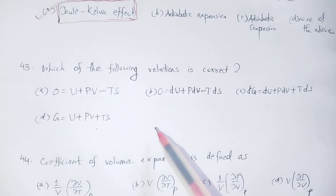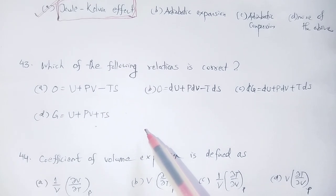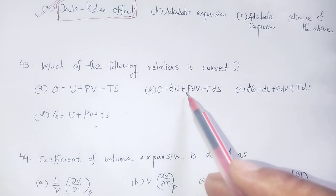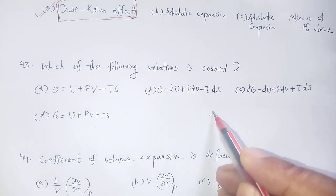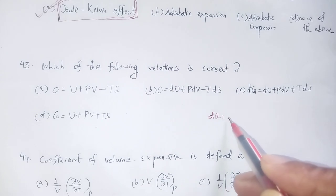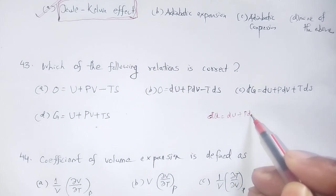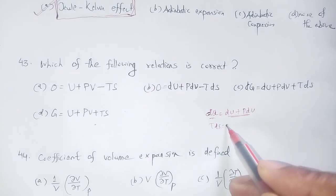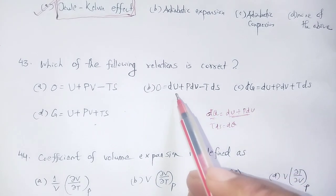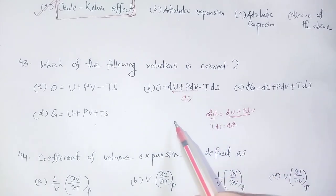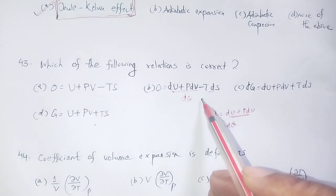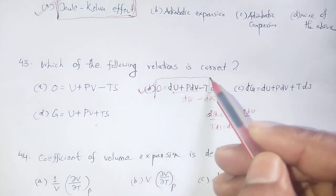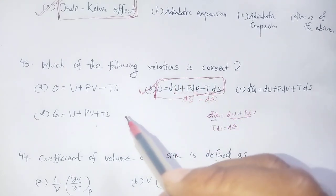Which of the following relations is correct? The correct relation is: TdS equals dU plus PdV. Since dQ equals dU plus PdV, and TdS equals dQ, therefore TdS equals dU plus PdV.